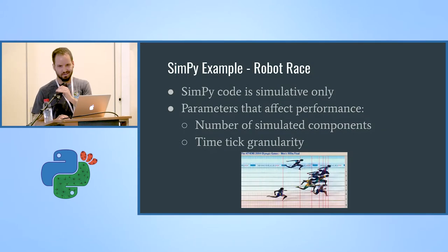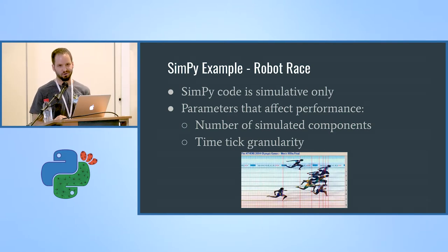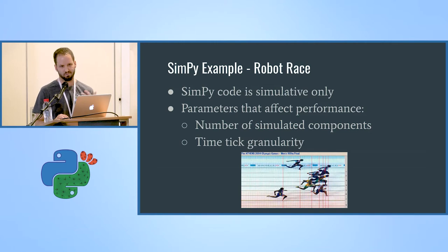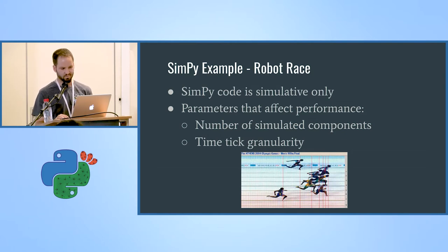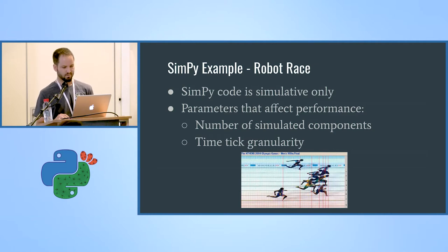Notice that the only code aware of SimPy is the simulated code — it doesn't run in production. Two parameters affect the performance of the simulation: the number of simulated components (more components means more calculations and slower time progression) and the time tick granularity (higher granularity means more time ticks per second and a slower simulation).